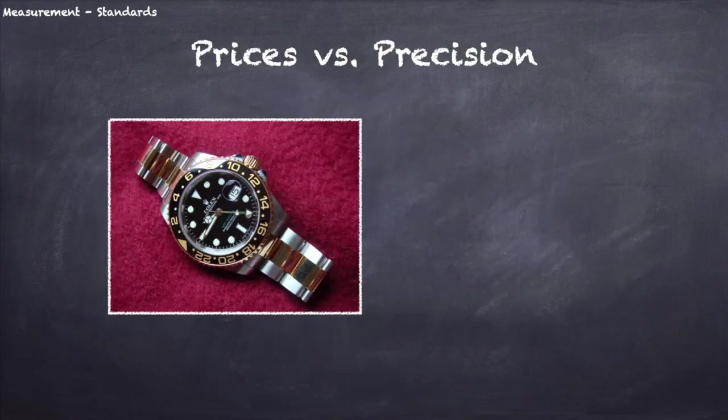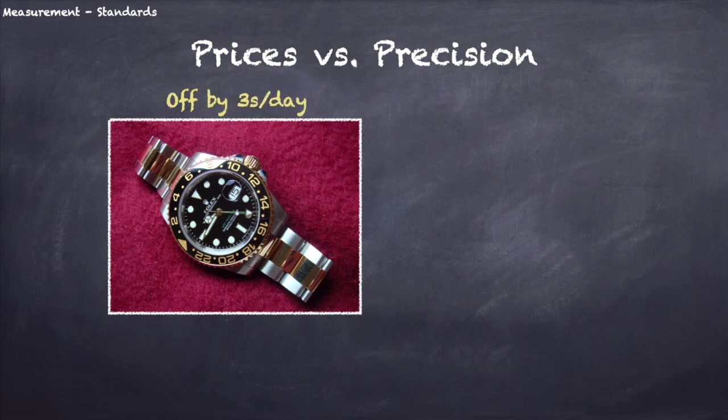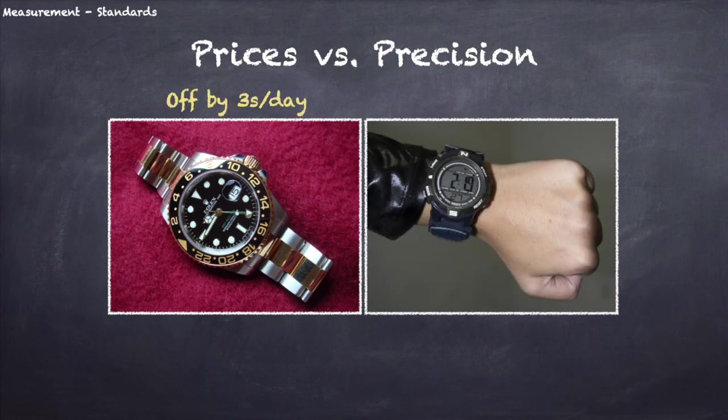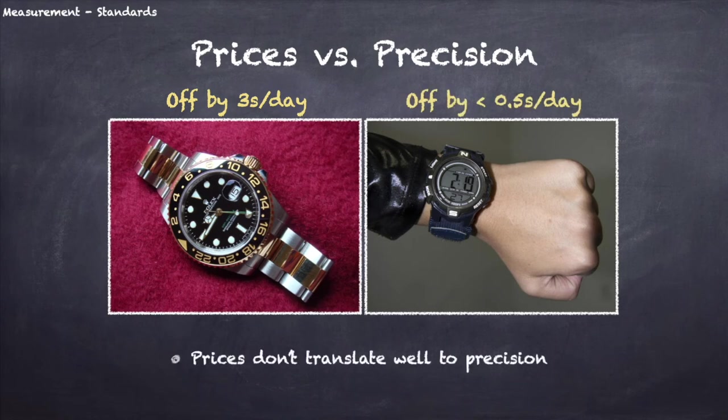Nowadays, if you're rich and fashionable, you may also invest in a luxury mechanical Swiss watch. But FYI, even the most expensive Swiss watch is typically off by about 3 seconds a day, whereas a cheap quartz watch can be off by less than half a second per day. Prices just don't translate well to precision in the world of watches.